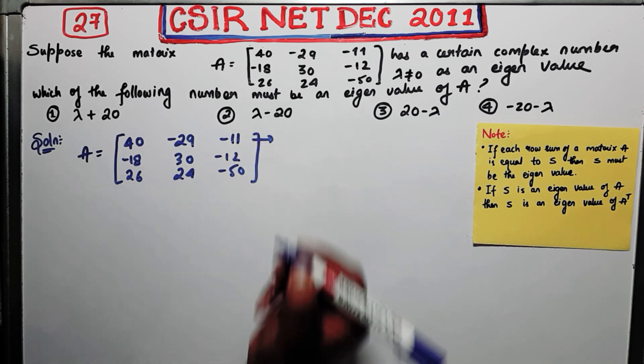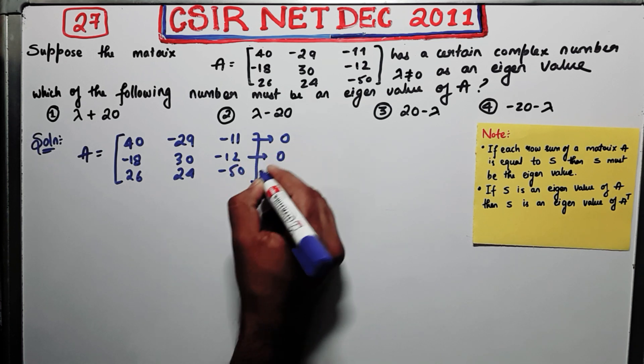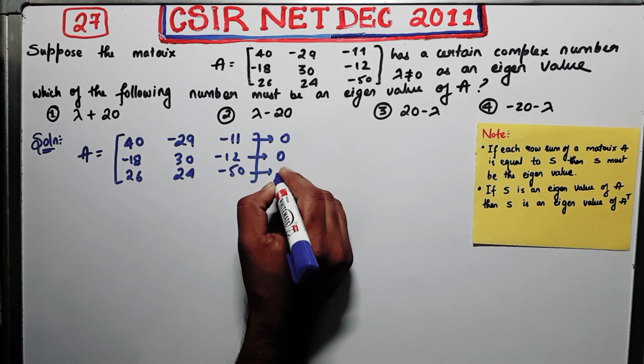Now you firstly figure out what is your row sum. So you see your row sum is zero from here, zero from here, and zero from here.